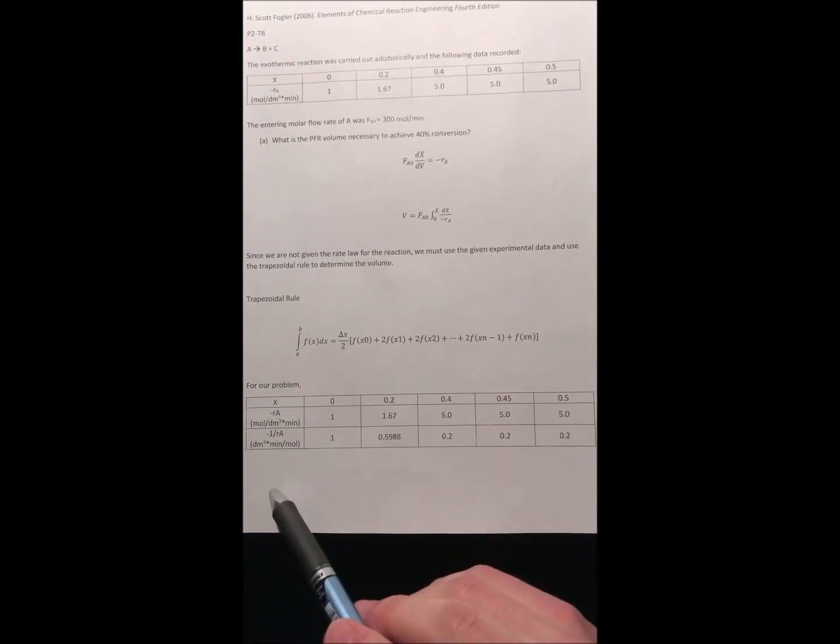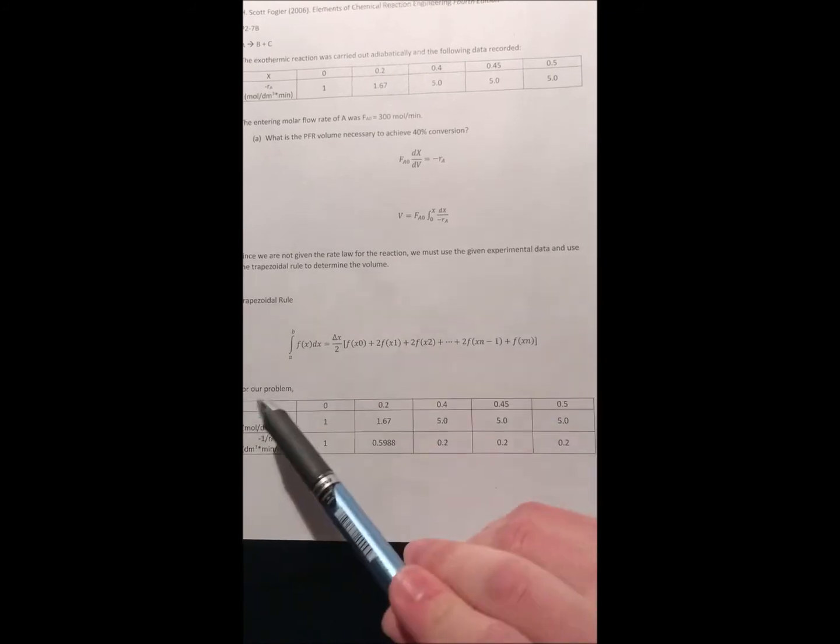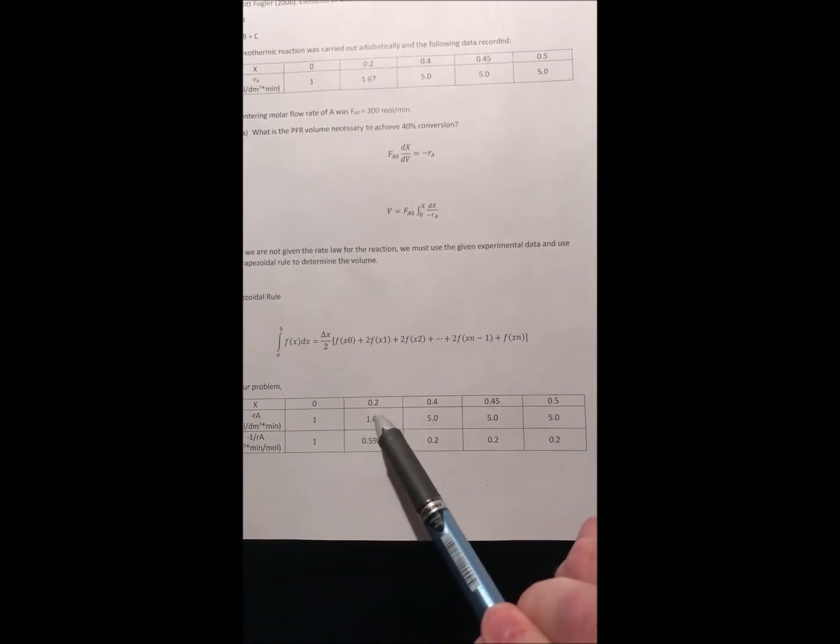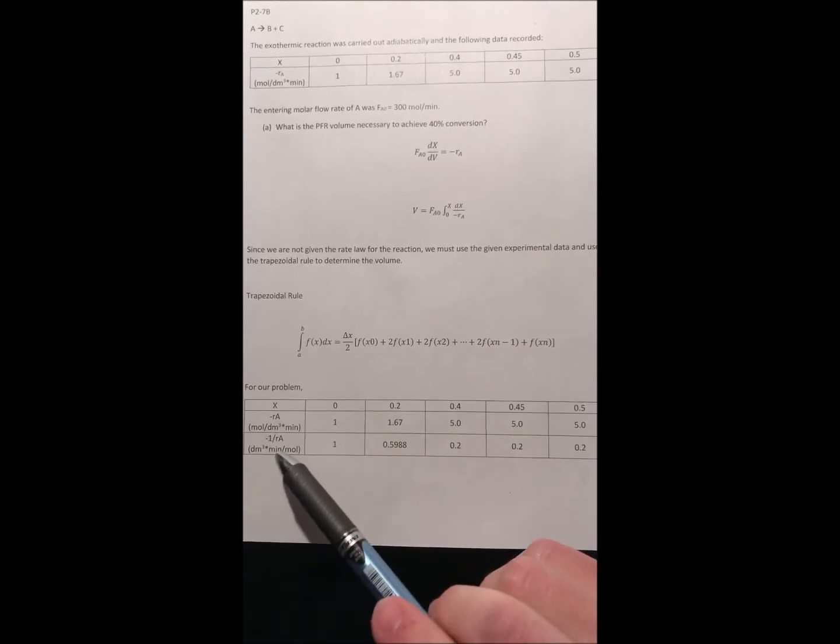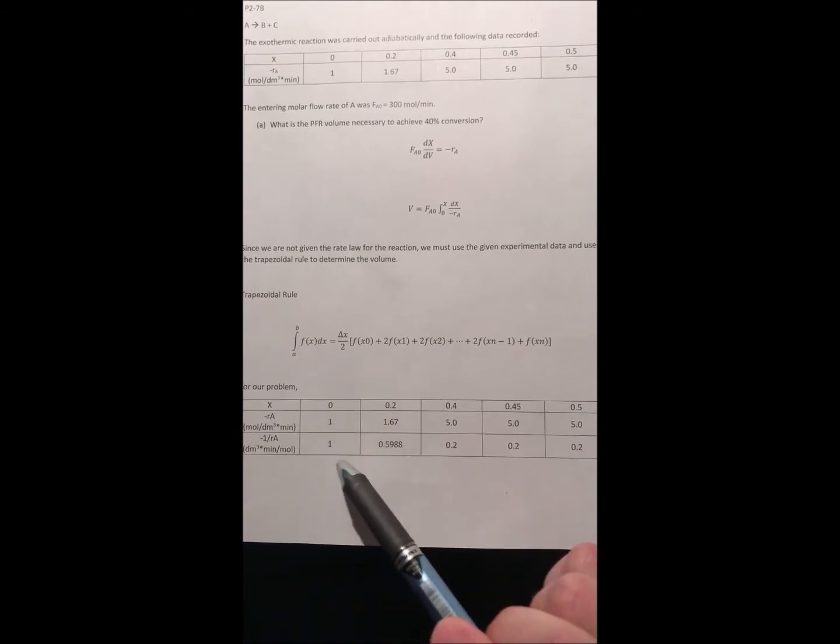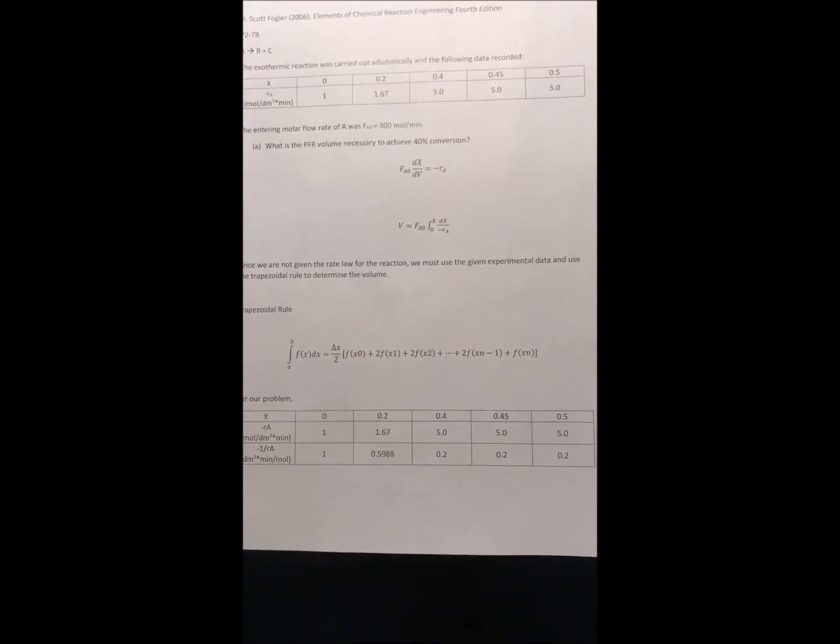For our problem specifically we were given different values of x which are the conversions and then the associated negative R sub A values which is the rate at each different conversion. And then we will take that one step further and take the inverse of each R sub A value and this will give our function of conversion for our trapezoidal rule.